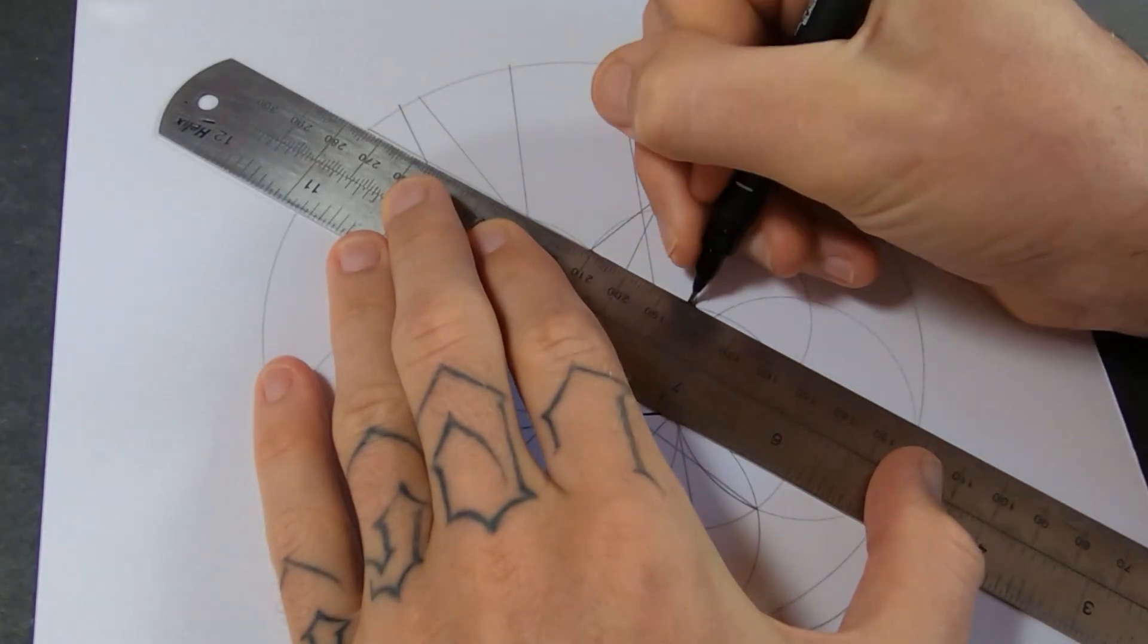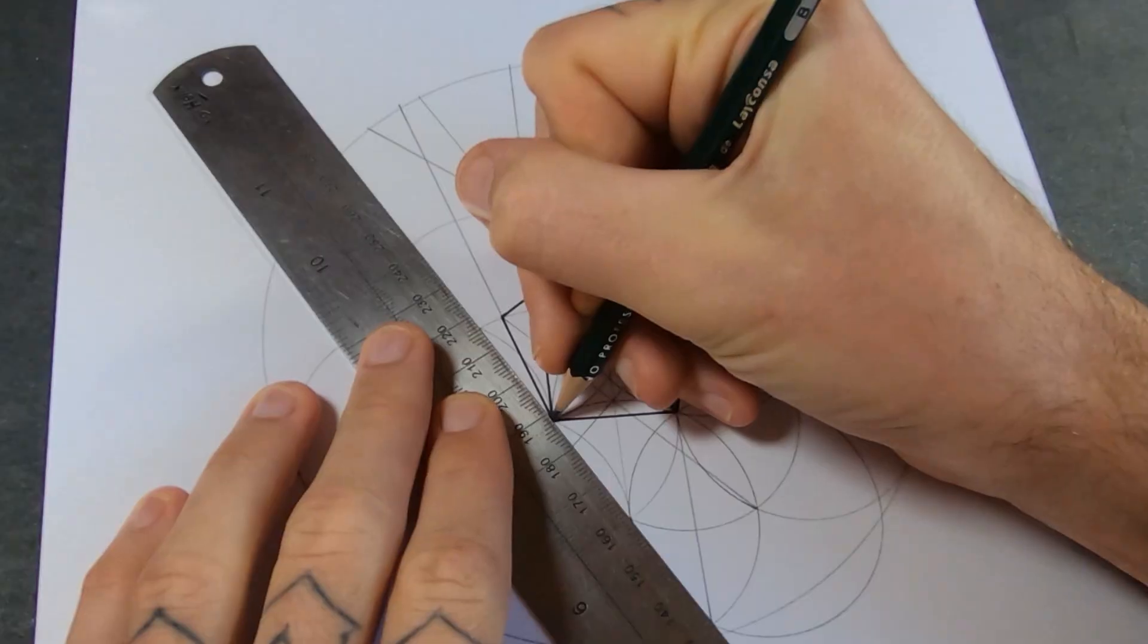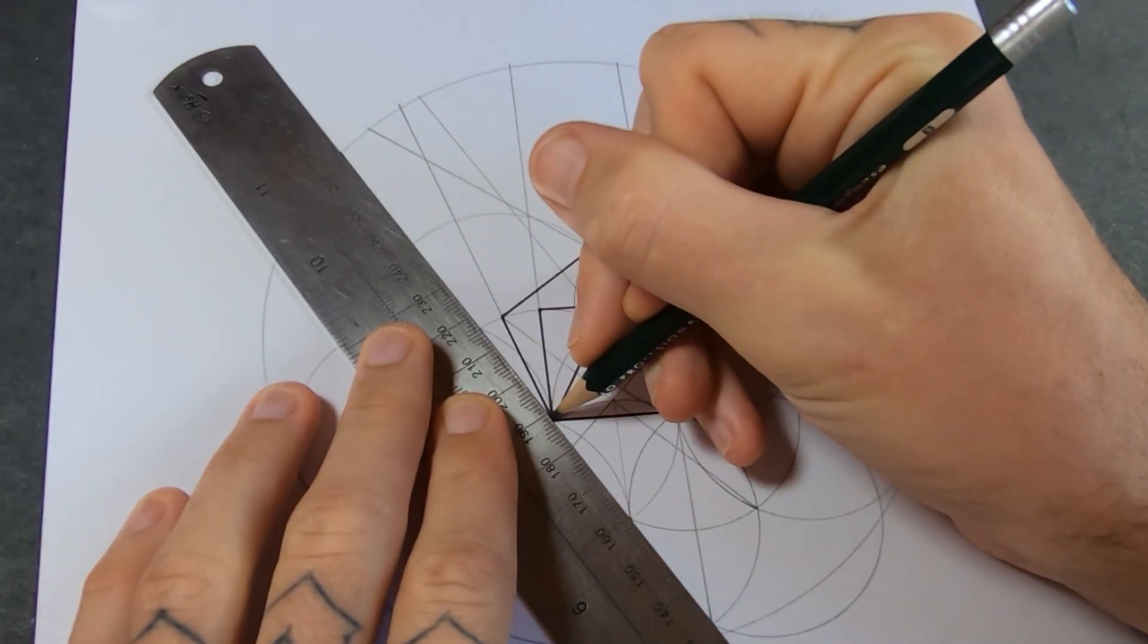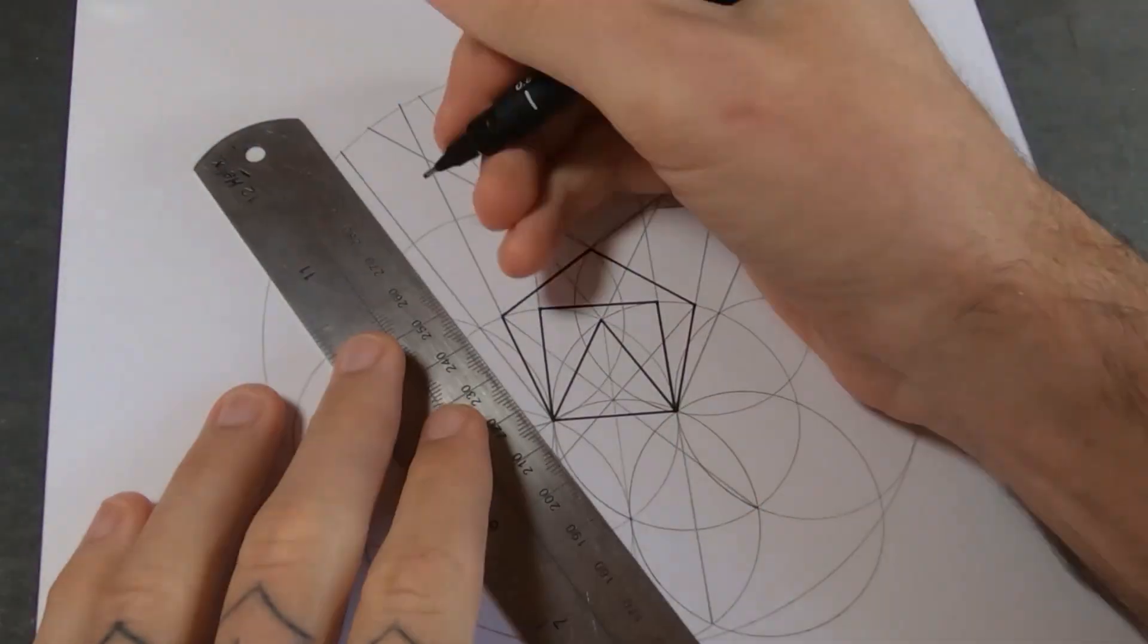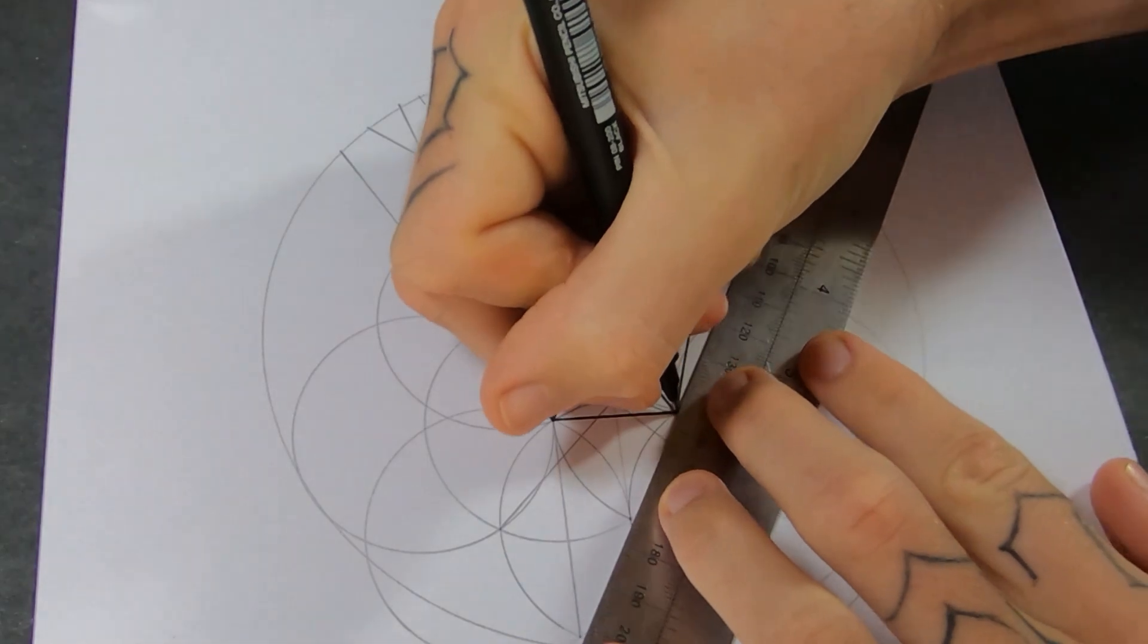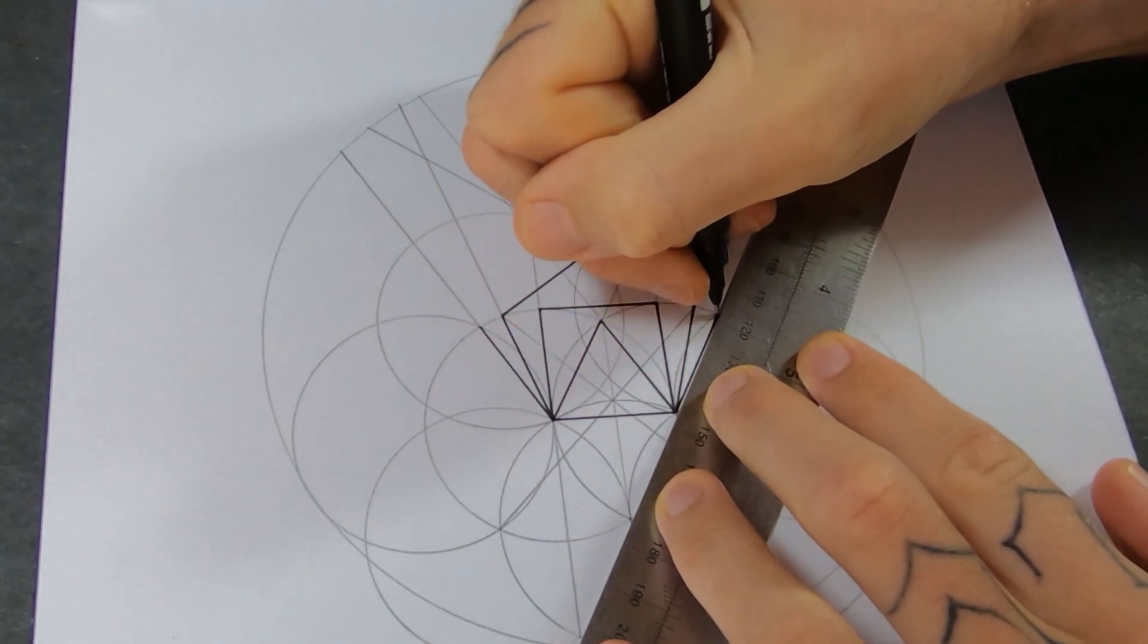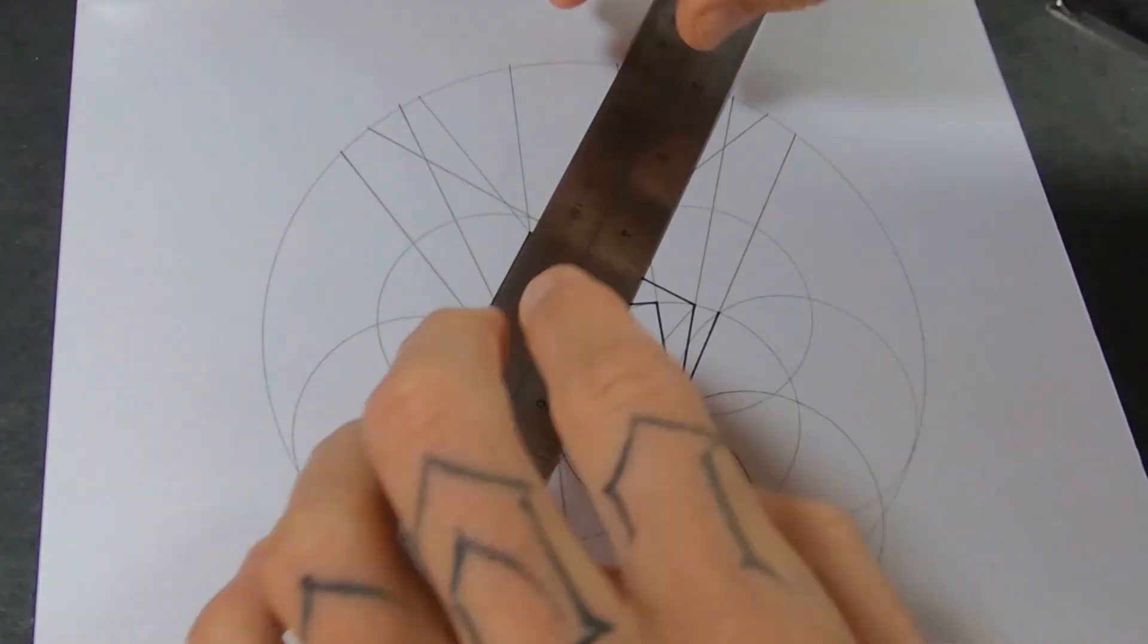Alright, the hexagon is easy because circles love to be divided into six. If I connect these intersections that we made right at the start with the circles, then use this line that's coming off the triangle to form the other half of the shape.